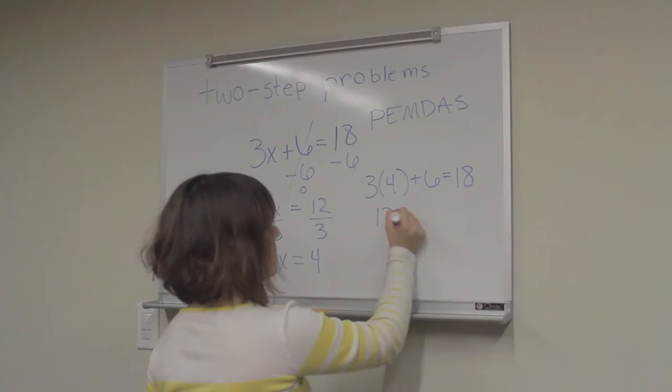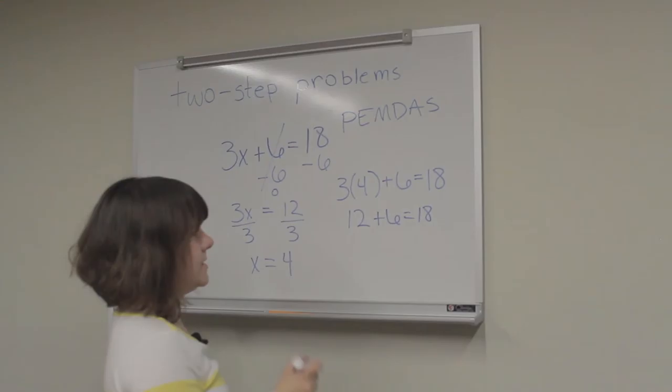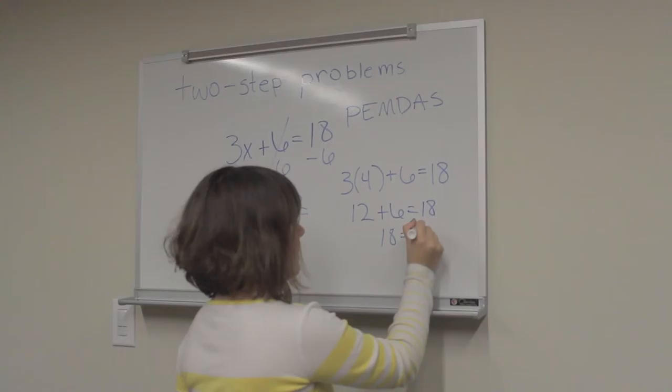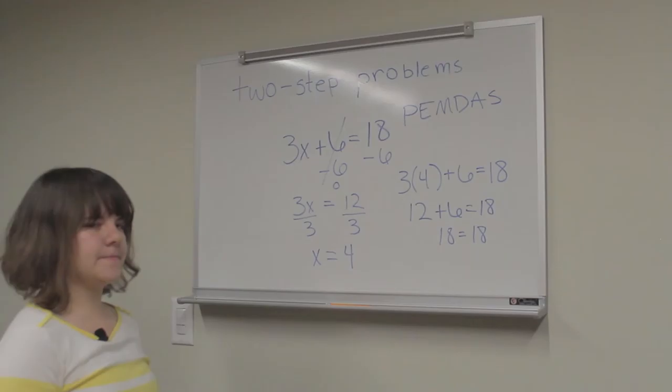So 3 times 4 is 12, and we rewrite the problem. And 12 plus 6 is 18. And 18 is equal to 18. So, again, x is equal to 4.